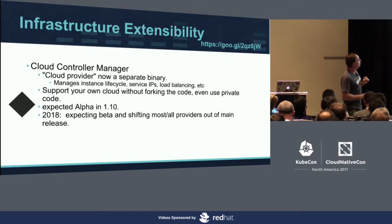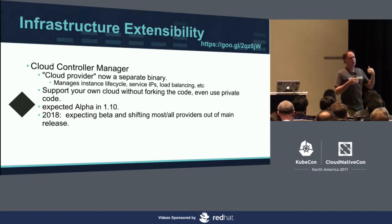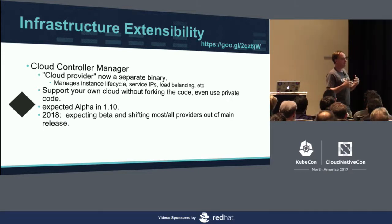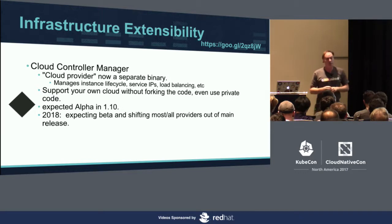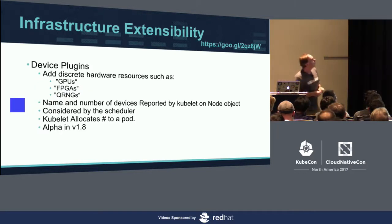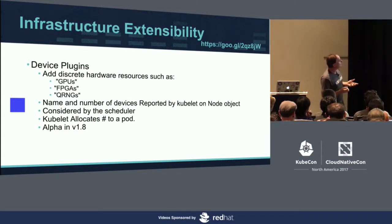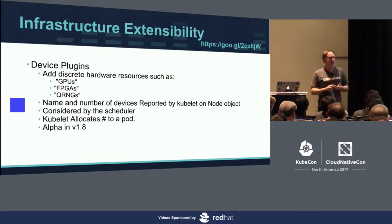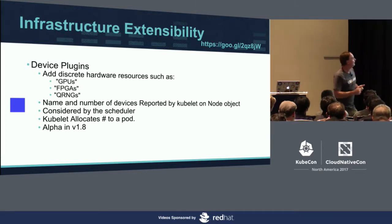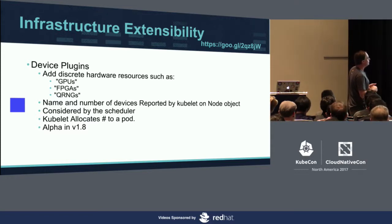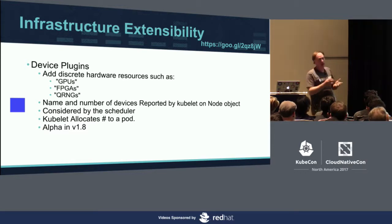Cloud container managers: right now you have a choice when you run your master to say you're on AWS, GCP, or whatever. We're going to move that code out to a separate binary. It almost got into 1.9 but looks like it'll be alpha in 1.10, with a lot of changes expected in 2018. Device plugins are a way to allow discrete hardware resources to be surfaced from your Kubelets — things like GPUs, FPGAs, and QRNGs (which is apparently a random number generator). It lets you surface them to the scheduler so you can see which nodes have these resources and which ones don't. This is alpha in 1.8.